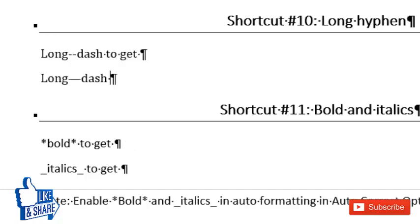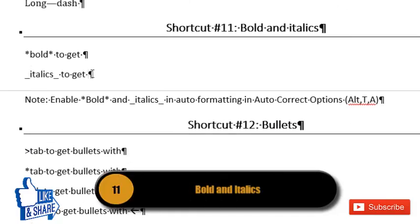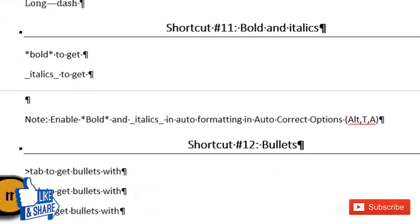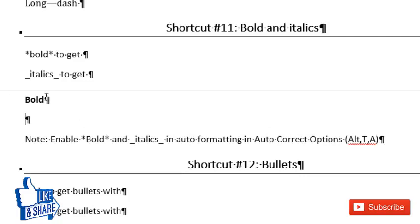To apply bold and italics, you can click the buttons in the font section or use Ctrl+B and Ctrl+I. But there is a hidden shortcut: enclose text in asterisks to make it bold, and enclose text in underscores to make it italic. The moment you type the closing underscore, the text gets converted to italics.